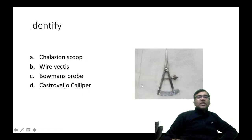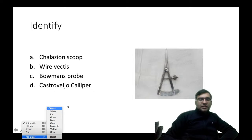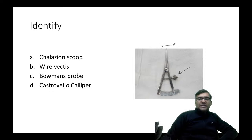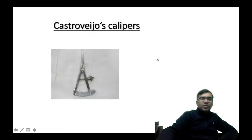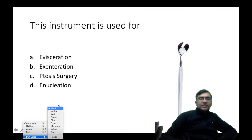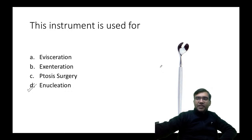The Castroviejo caliper is an instrument used to measure distances in ophthalmology surgery. It has handles that open to measure specific dimensions on the eye. Another instrument previously shown is the enucleation spoon with an optic nerve head guard. Indications for enucleation include intraocular tumors such as retinoblastoma and uveal melanoma.